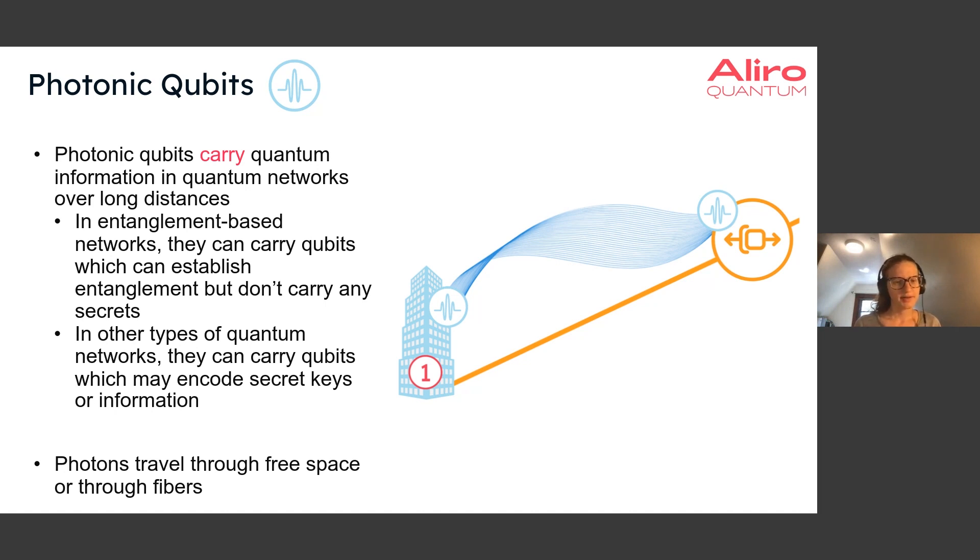However, in other types of quantum networks, such as QKD-based quantum networks, these photons will carry qubits which may actually encode the secret keys or information. Either of these things can be true depending on the type of quantum network.